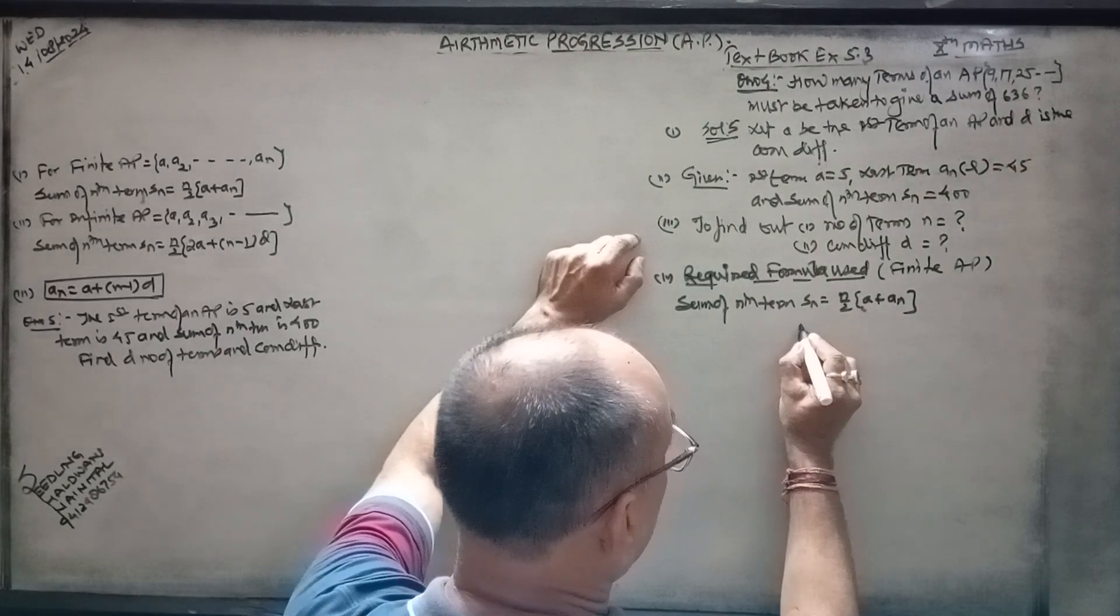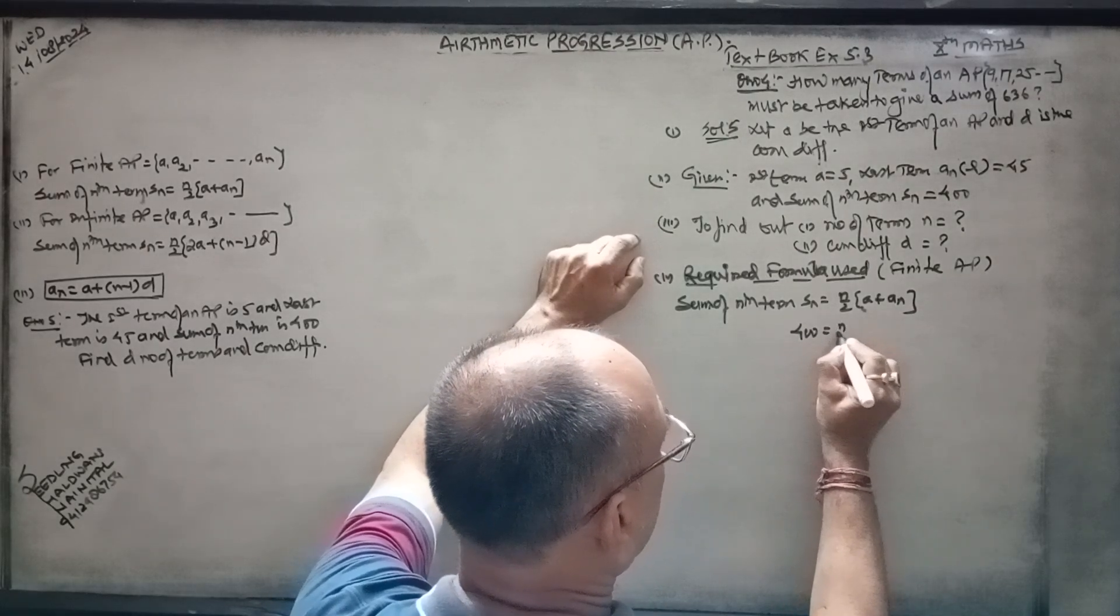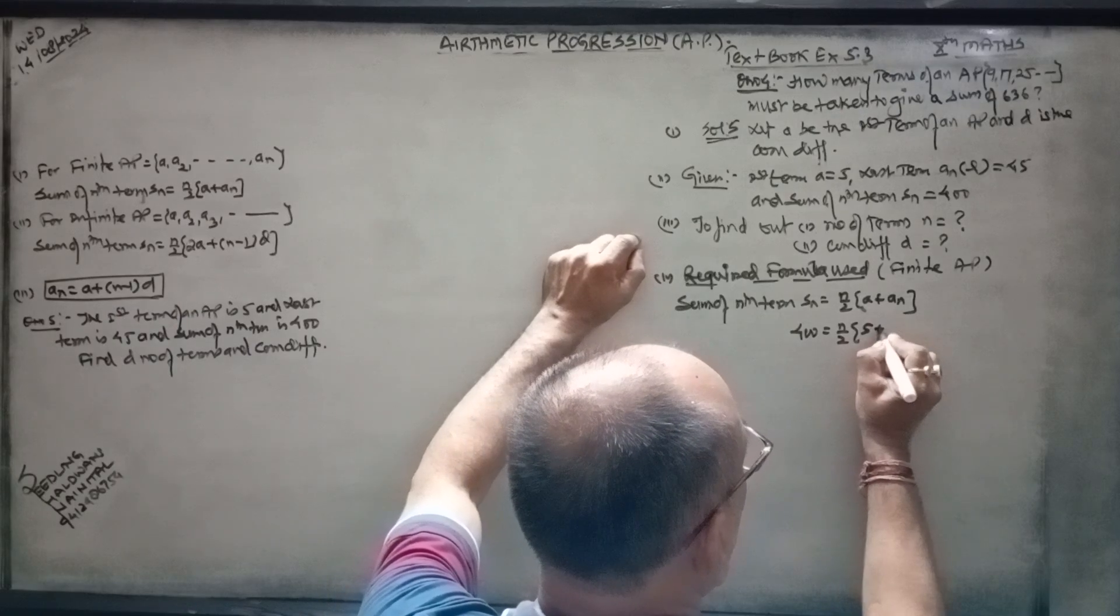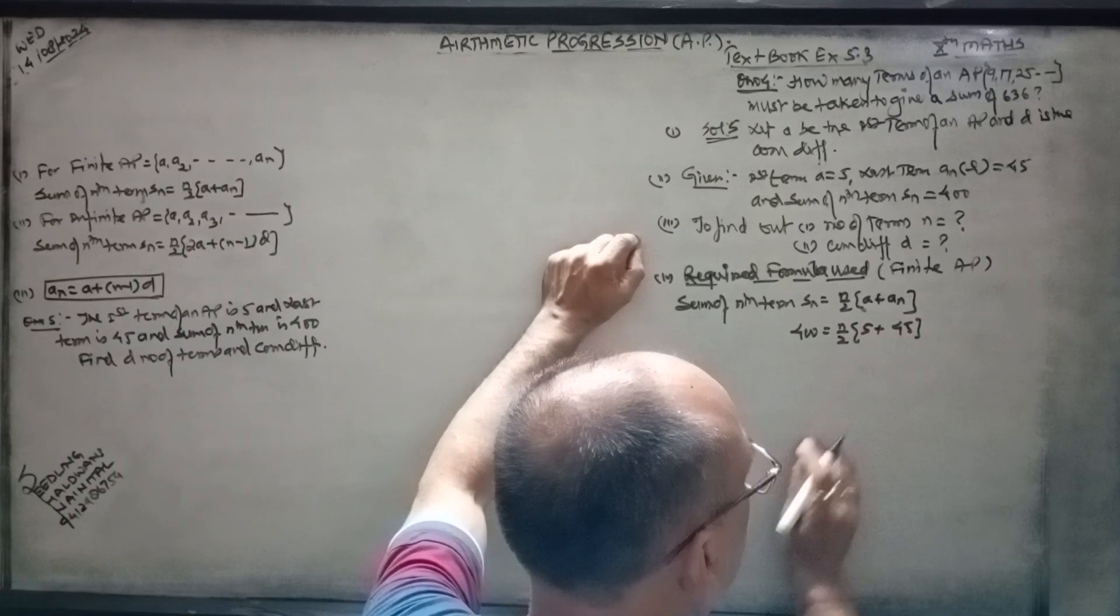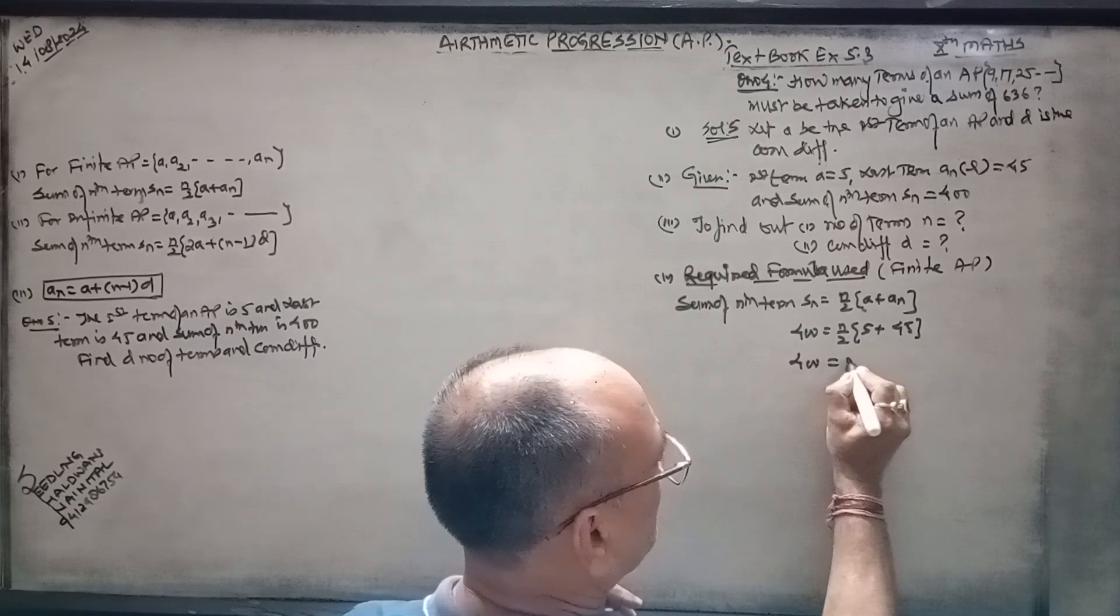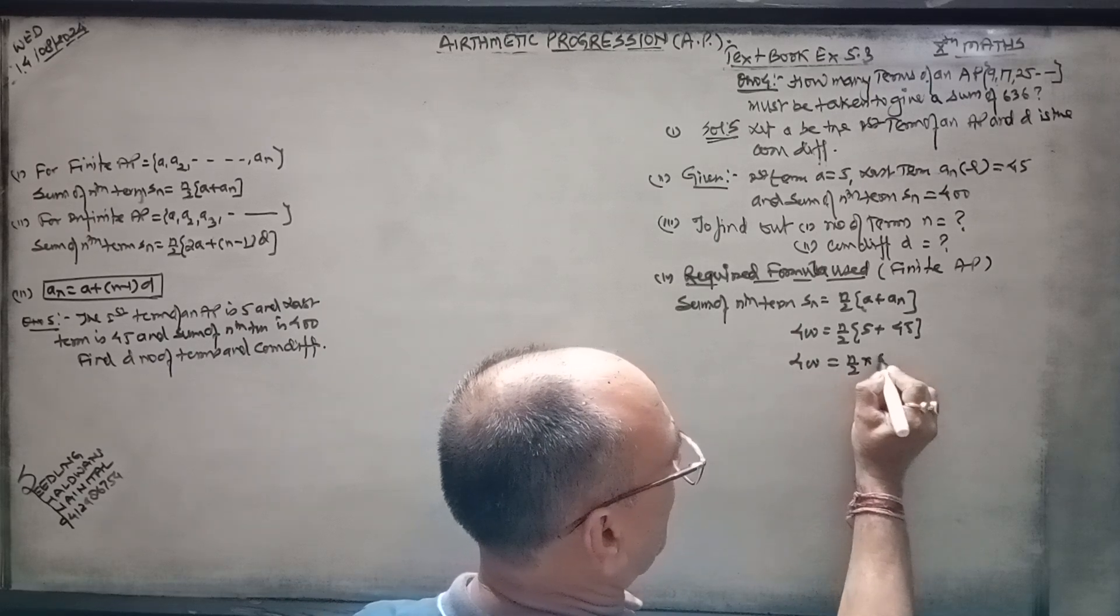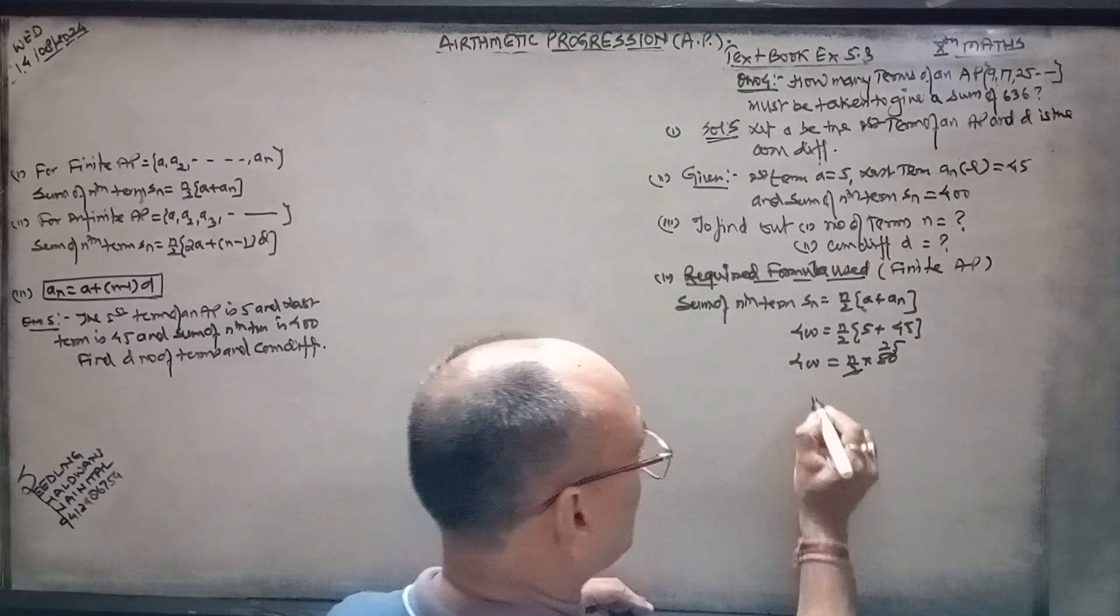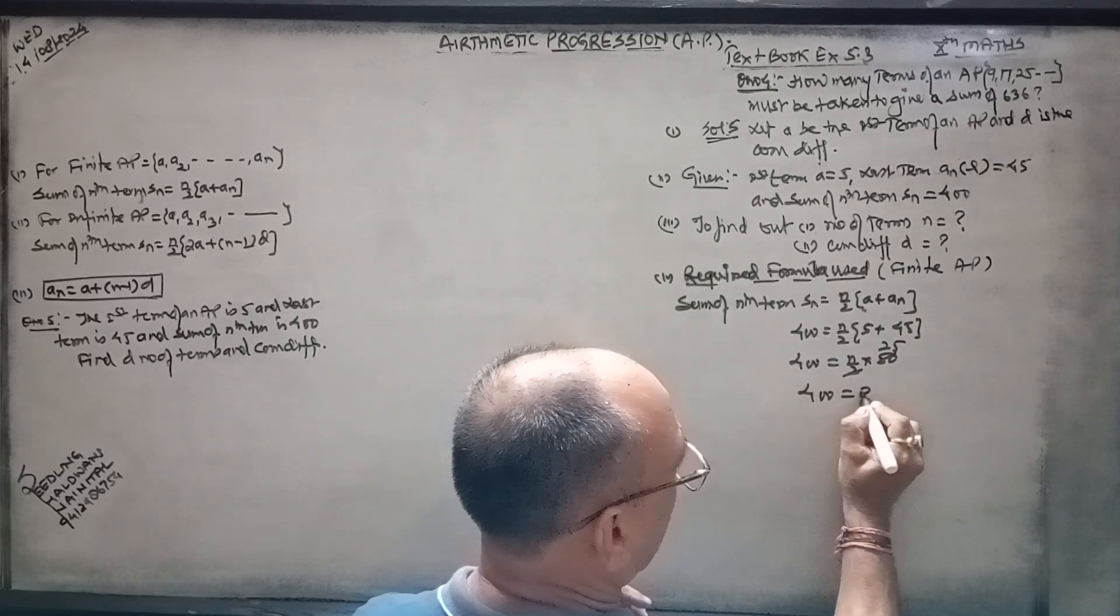Sn is 400, so 400 equals n by 2 times (a plus An). A is 5, An is 45, so that's n by 2 times 50, which equals 25n.